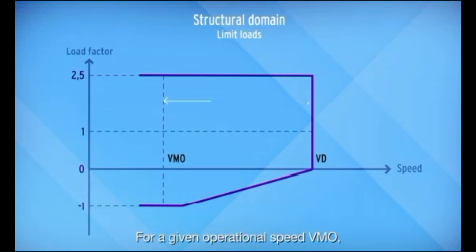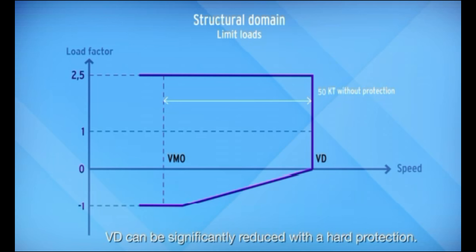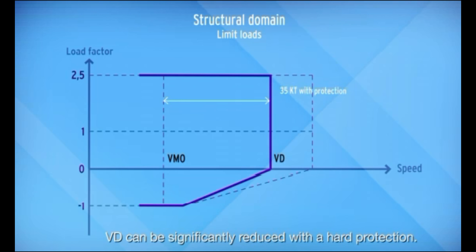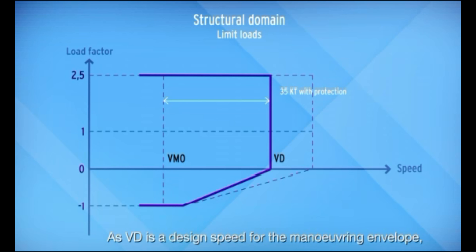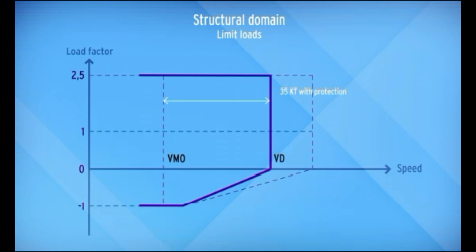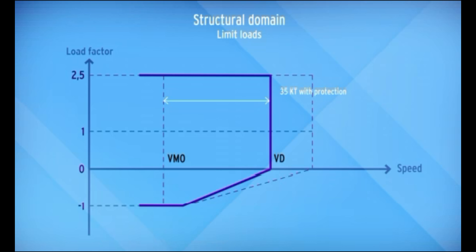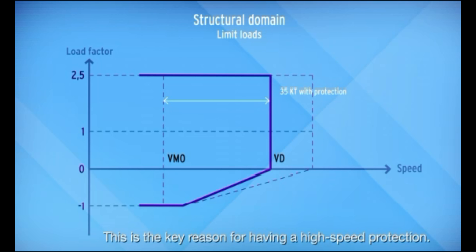For a given operational speed VMO, VD can be significantly reduced with a hard protection. As VD is a design speed for the manoeuvring envelope, the loads can be considerably reduced because they are a function of V squared. It results in significant weight saving for the structure. This is the key reason for having a high-speed protection.